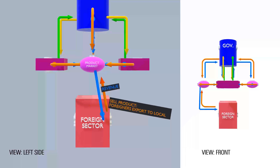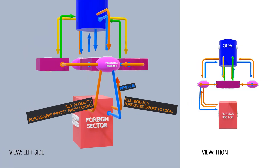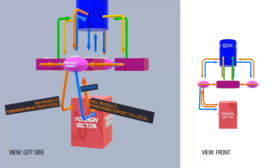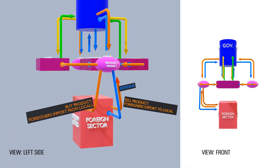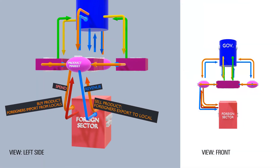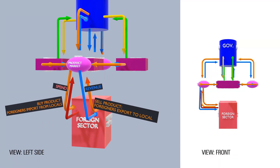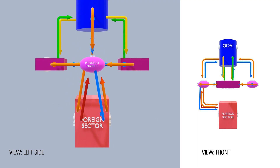The locals can also sell to foreigners — the foreign sector or foreign countries will pay them in foreign currency, directly or indirectly. A general reminder: always use a reference subject when using the terms import or export, so we know who is buying and who is selling — for example, they export, we import, and vice versa.